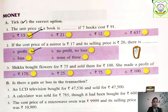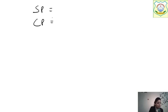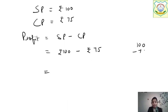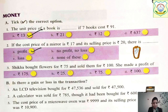Next: she bought flowers for ₹75 and sold them for ₹100. CP = ₹75, SP = ₹100. Profit = SP − CP = 100 − 75 = ₹25 profit. Put a tick mark on ₹25.